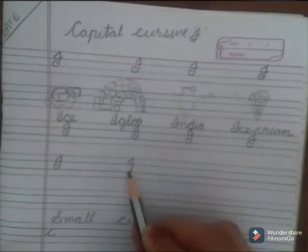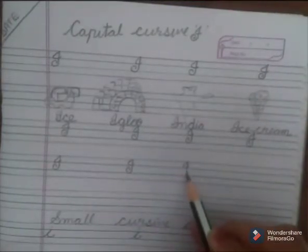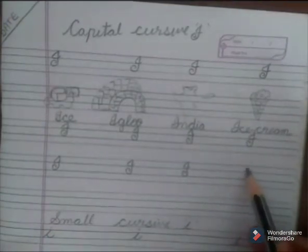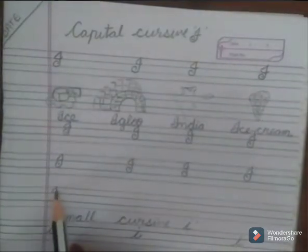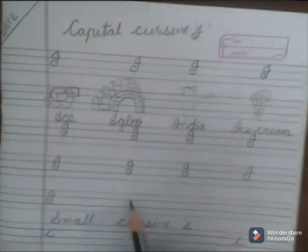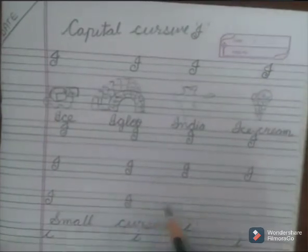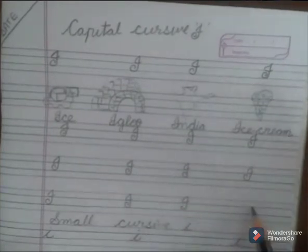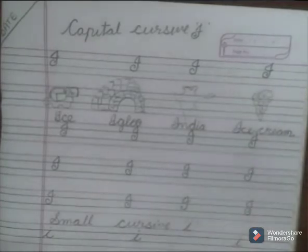I. I for ice, I for igloo, I for India, I for ice cream. Don't pick up the pencil until you complete the alphabet. Capital cursive I.